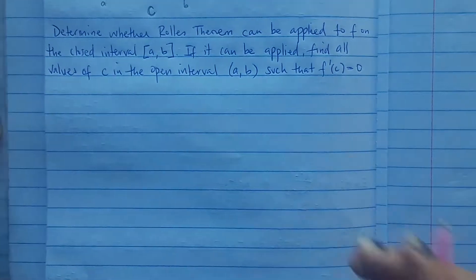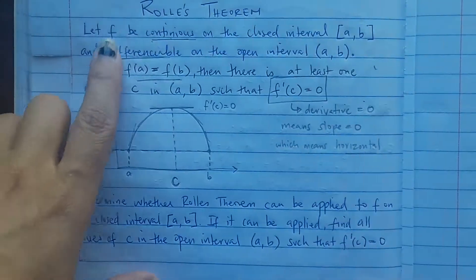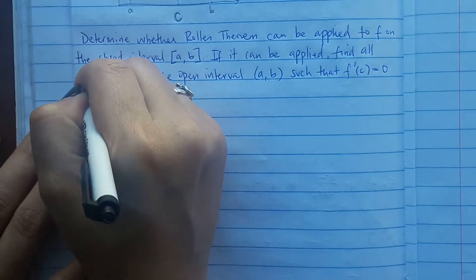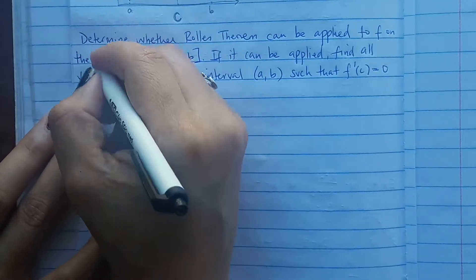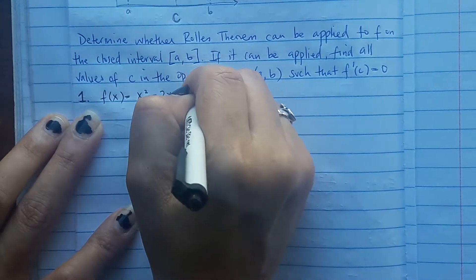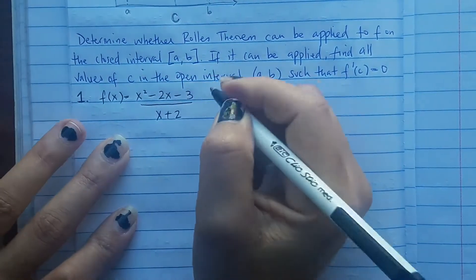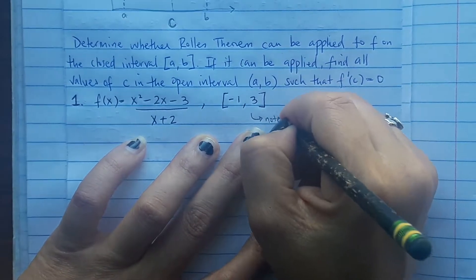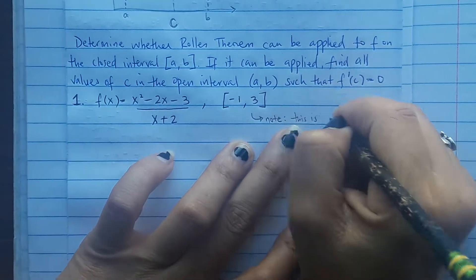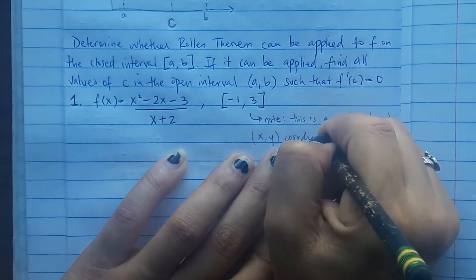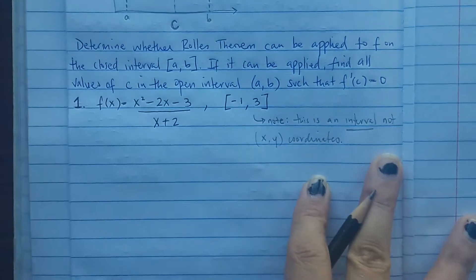So we start off with a function. Number one: the function is going to be (x squared minus 2x minus 3) over (x plus 2), and the closed interval is going to be [negative one, three]. Note: this is an interval, not x and y coordinates. These are both x values — it's telling you x is between negative one and three.